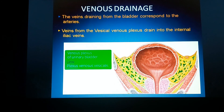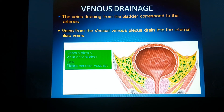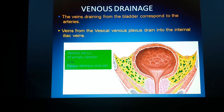Coming to the venous drainage — the veins draining from the bladder correspond to the arteries. Veins from the vesical venous plexus drain into the internal iliac veins.